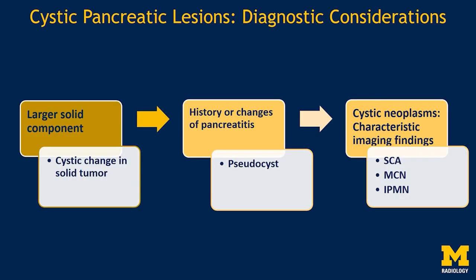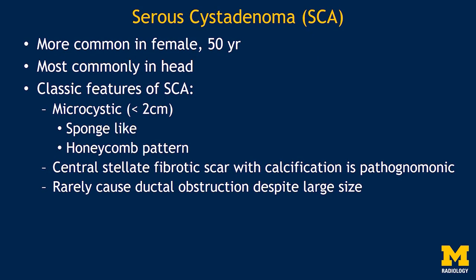Once we have excluded cystic change in a solid tumor and a pseudocyst, we consider the differential diagnosis of a true cystic pancreatic neoplasm, identifying characteristic imaging features to guide diagnosis of serous cystadenoma, mucinous cystic neoplasm, or IPMN. Serous cystadenoma is more common in females around 50 years of age, commonly in the head of the pancreas. Classic features include a microcystic appearance with cysts less than 2 cm giving a sponge-like or honeycomb pattern, and a central stellate fibrotic scar with calcification, which is pathognomonic.